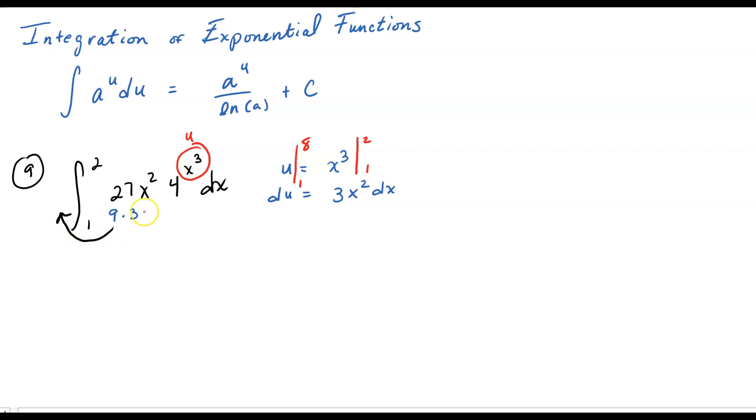This right here, the 9, of course, is going to go on the outside of the integral. The integral is now going to go from 1 to 8. Now I'm going to write it still as the 3x squared, and then the 4 to the x cubed dx. But I'm fixing, which is technically not correct. But I'm going to write it with my rings here for my u and my du, because now I'm ready to write it in terms of u. I'm going to write 9 on the outside, the integral from 1 to 8. And then I'm going to have 4 to the power u du.